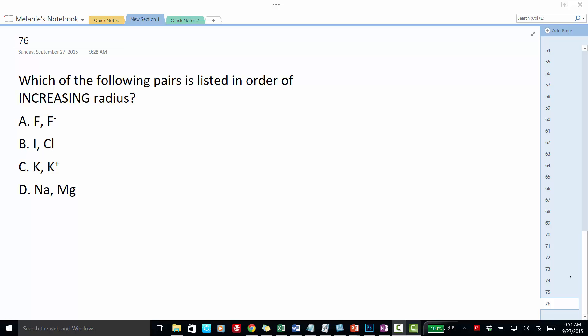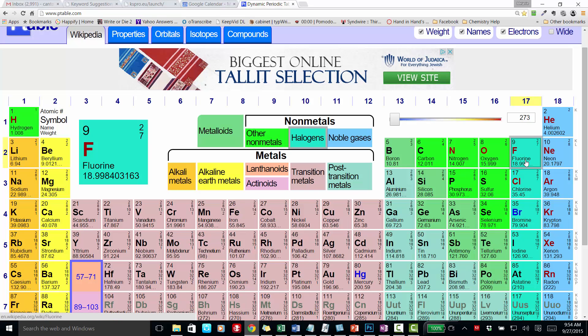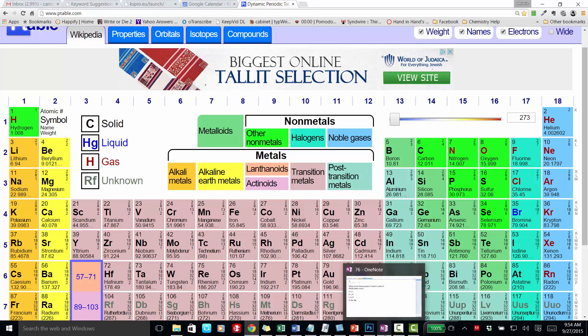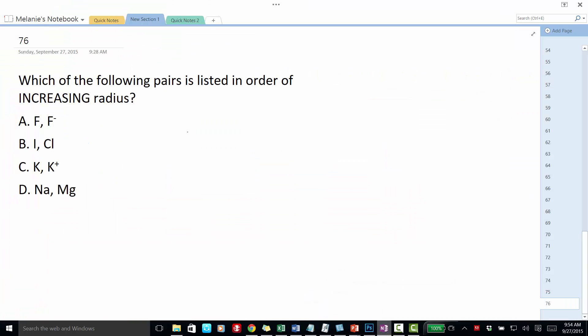So let's look at these pairs. First of all, we have fluorine and fluoride. Fluorine has nine electrons. Fluoride with a negative charge has an additional electron, so we know that fluoride is going to be larger than fluorine. So already that's one of ours. This is 9 electrons and this is 10 electrons.